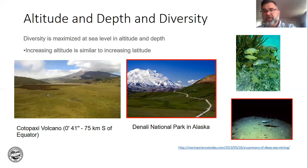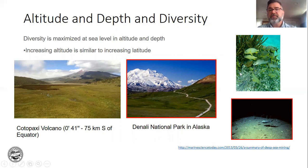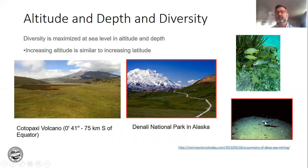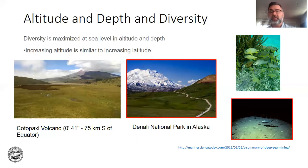Likewise, as you go deeper in the ocean, you get fewer and fewer species. When you are at the surface of the water, you get lots of different species. As you move to deep water, you get fewer species. At the bottom of the ocean, in many areas, species richness is relatively low.